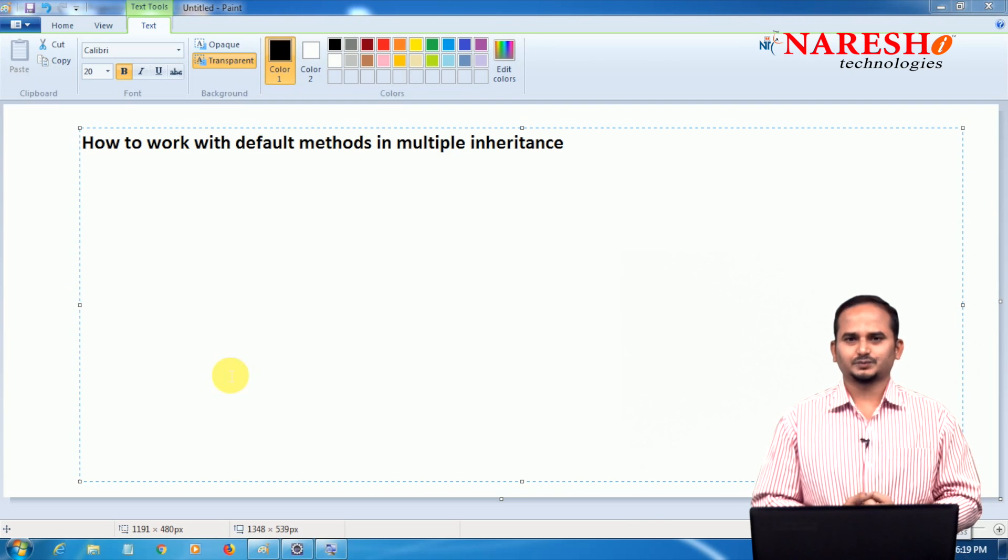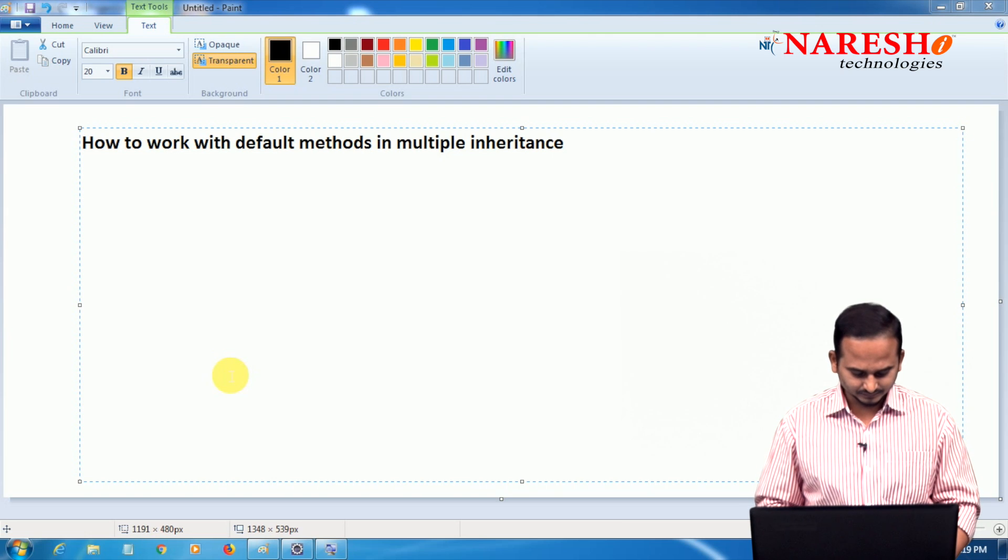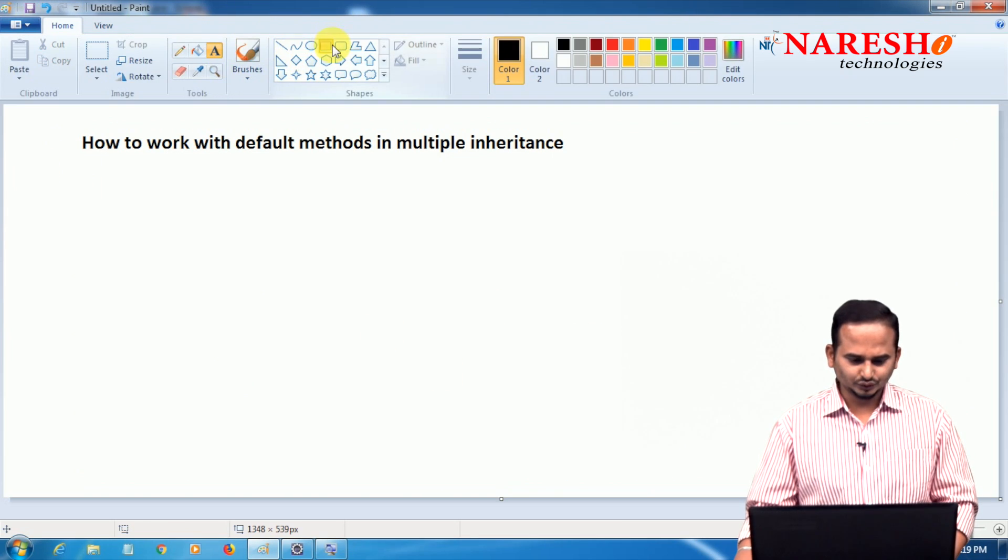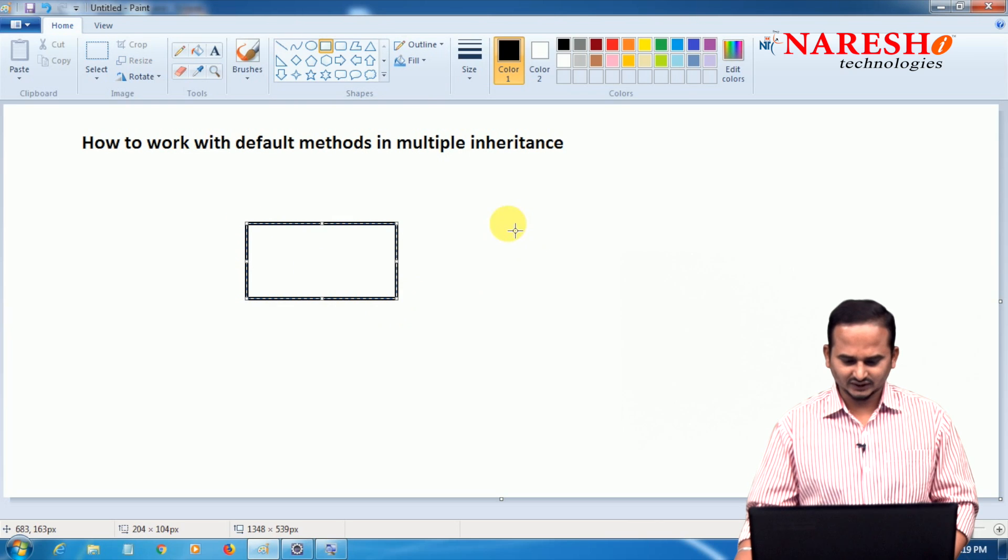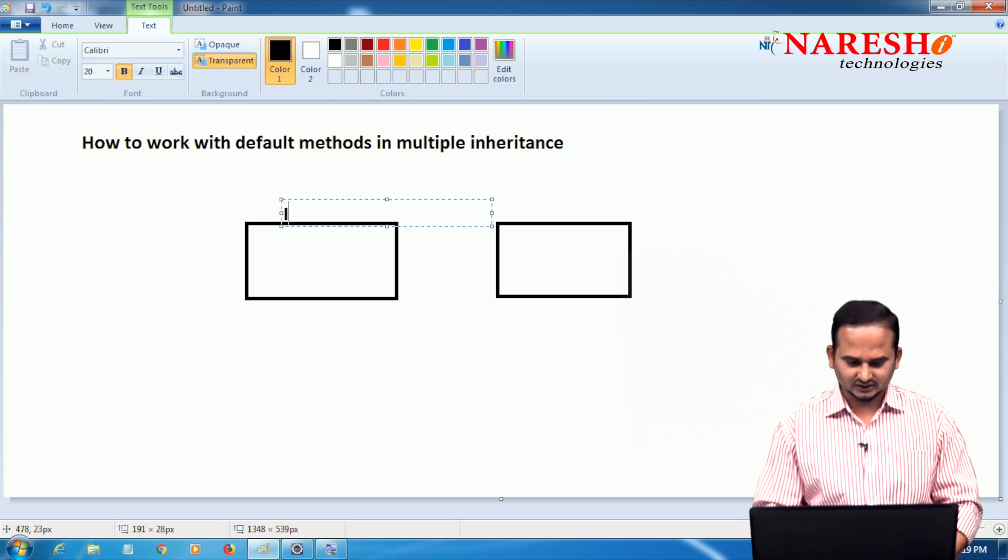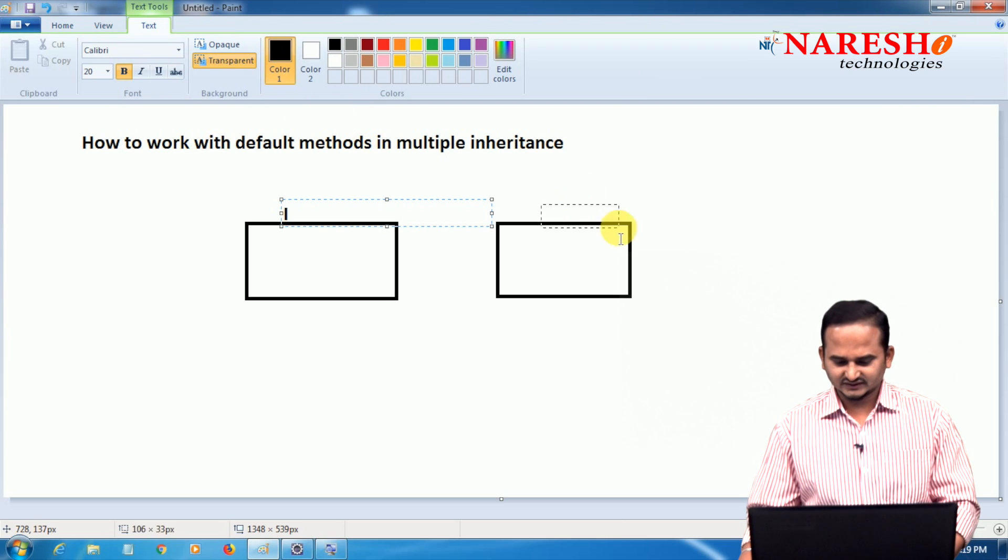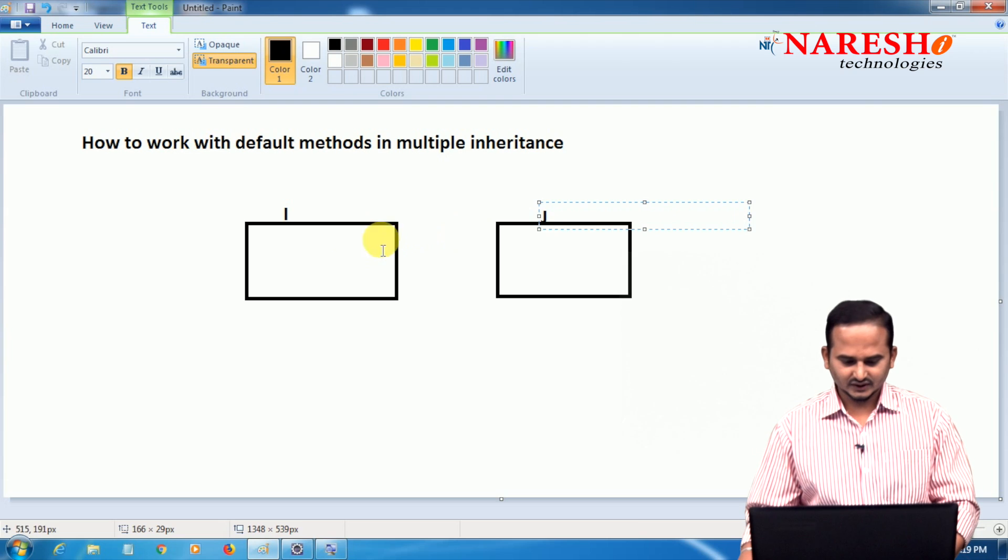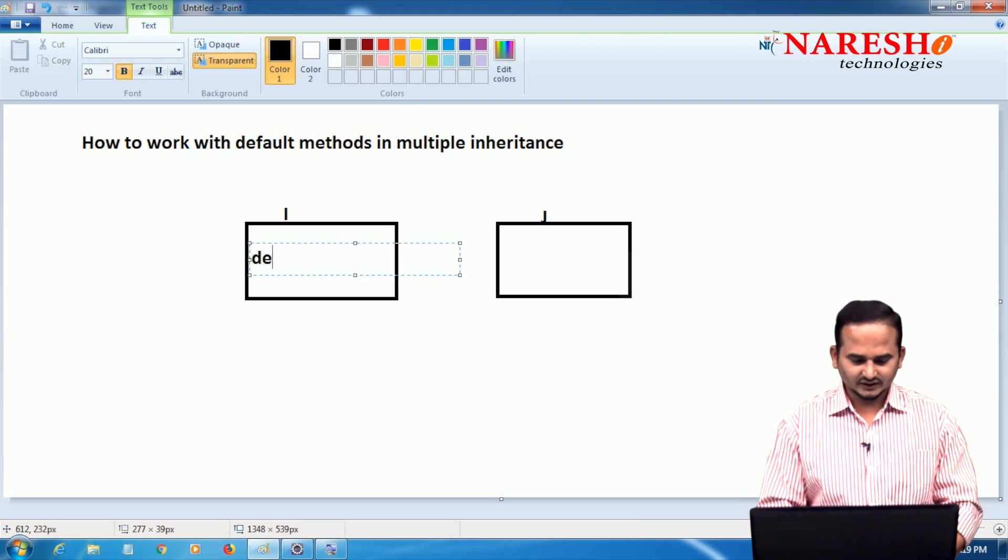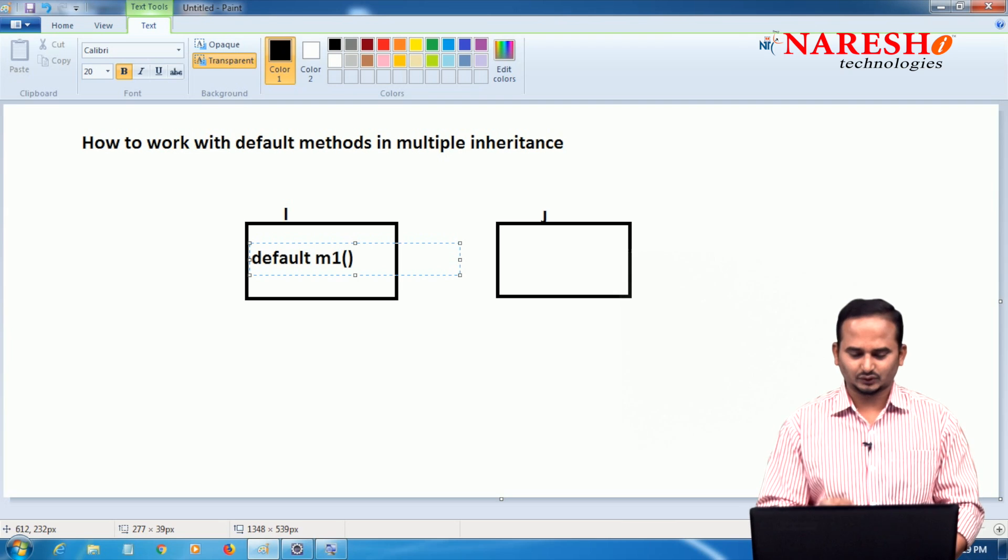What is that? Ambiguity problem. Then how can we resolve this problem? Let me show you. There are two interfaces, one and second one. This interface name is I, this interface name is J.